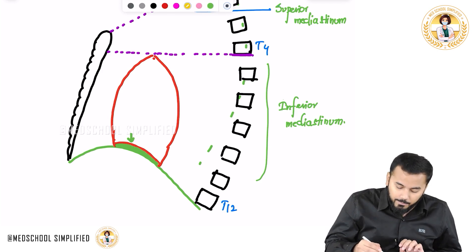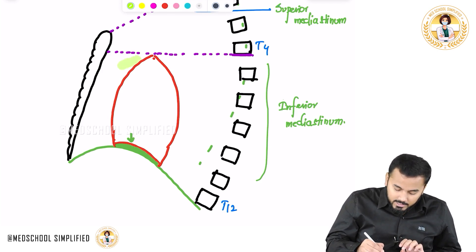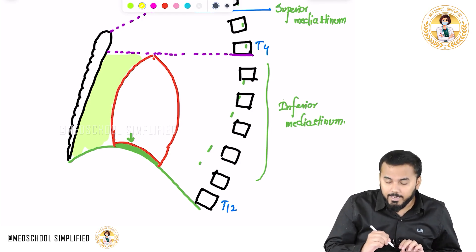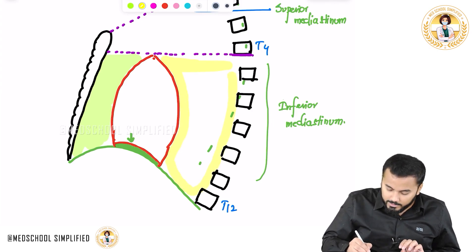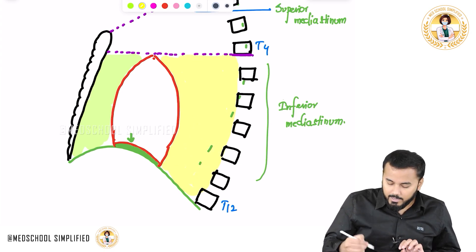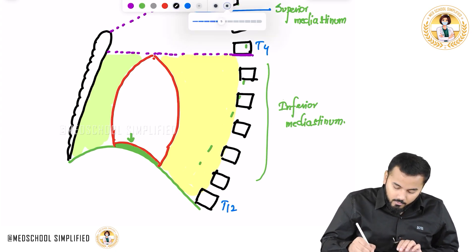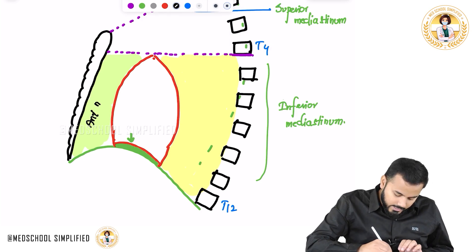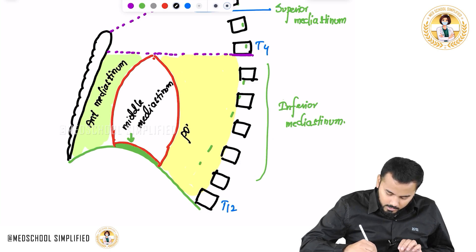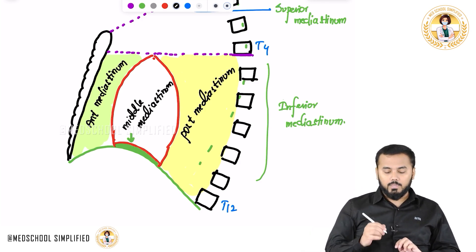Within the inferior mediastinum there are three parts. The highlighted front part is called the anterior mediastinum, where the heart is located is called the middle mediastinum, and the part further back is called the posterior mediastinum. So we have three types: anterior, middle, and posterior mediastinum.